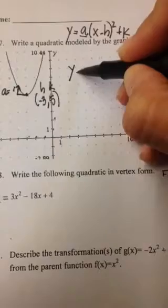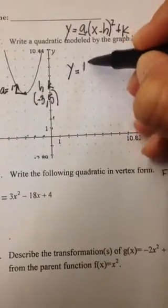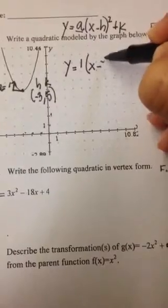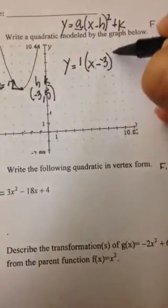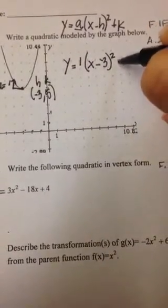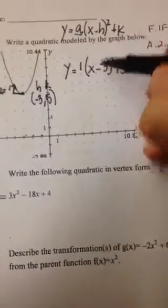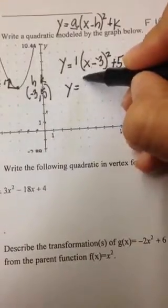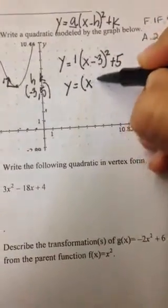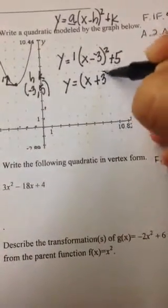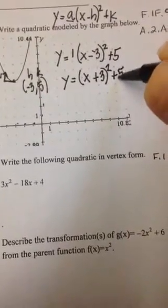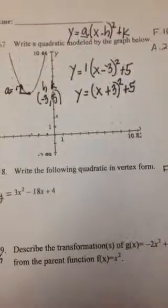Now I just plug in: y = 1(x - (-3))² + 5. Well, minus a negative is really positive, and I don't really need to write the 1 either. So this is just going to be y = (x + 3)² + 5. And you're done.